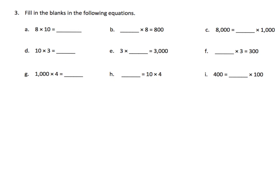We're going to continue that experience, and now they're giving us some missing blanks for students to fill in. For example, something times eight gives us 800 — we're missing 100. A thousand times four gives us 4,000. And something times a thousand gives us 8,000 — we're missing the eight. Students fill in the blanks using their logic; they don't need to demonstrate any big math understanding at this point.